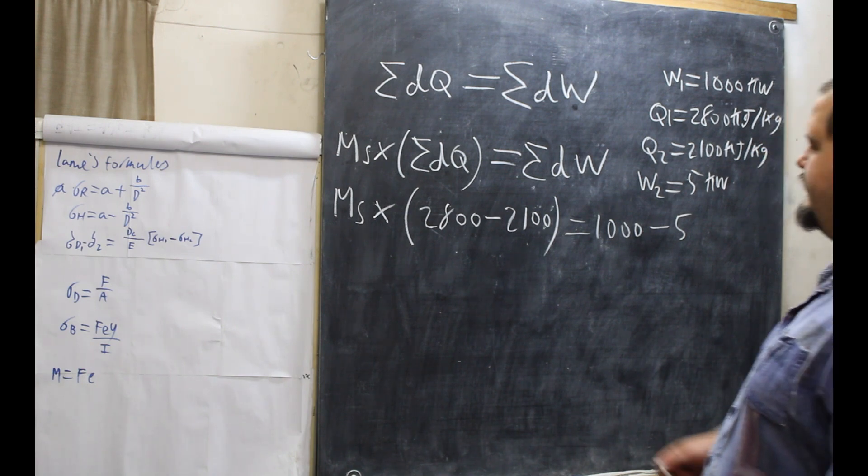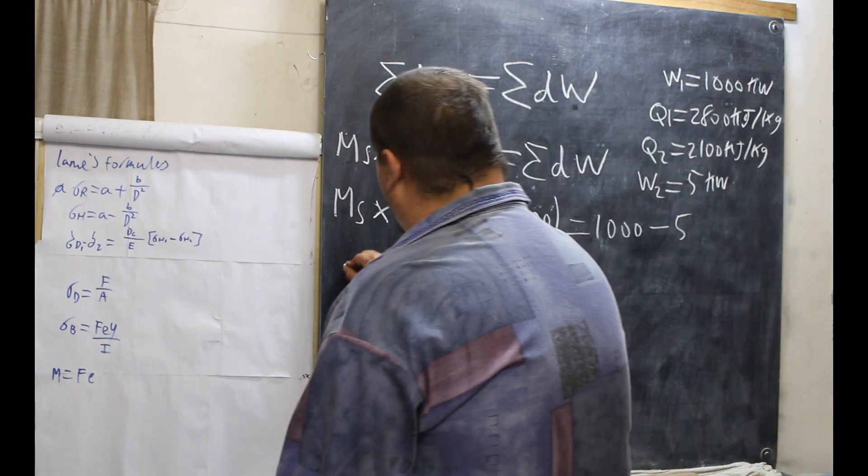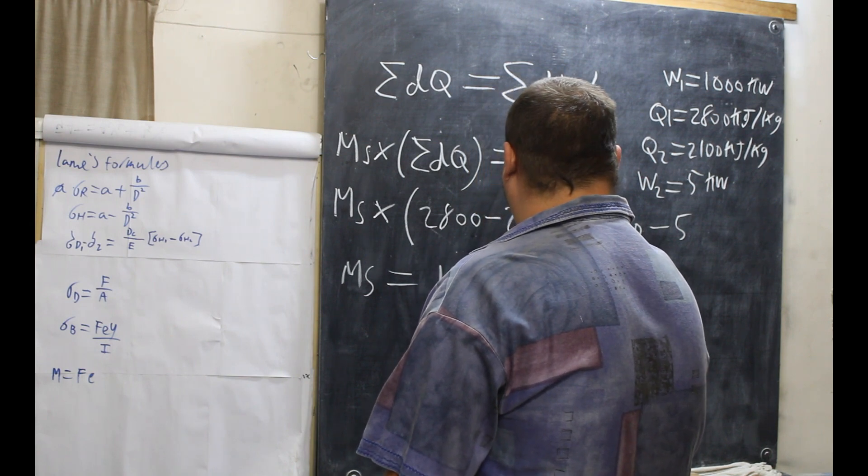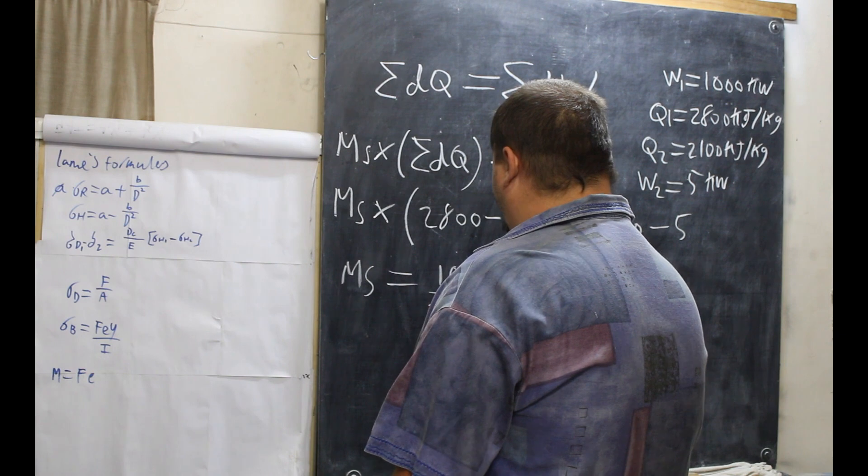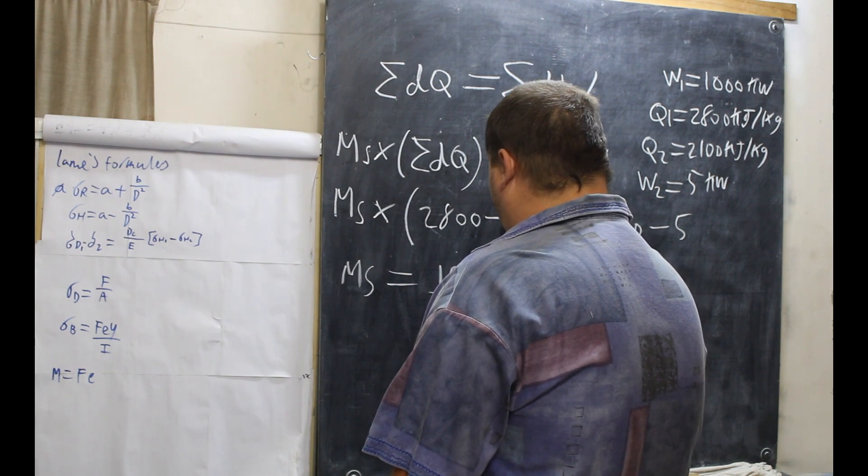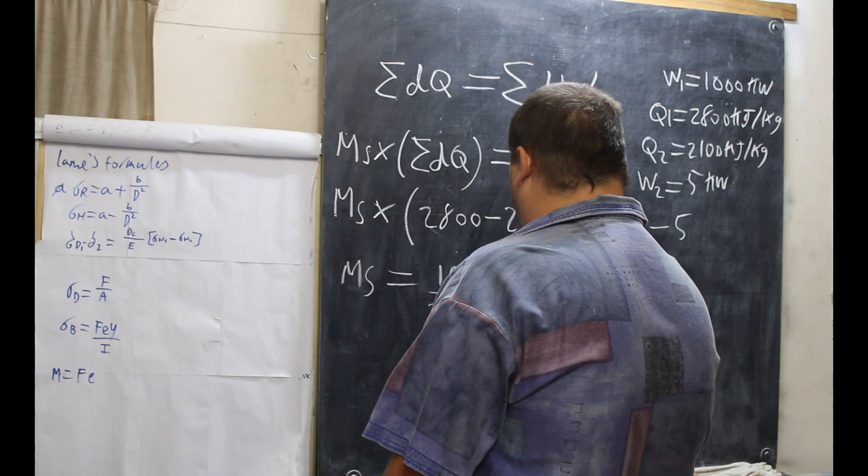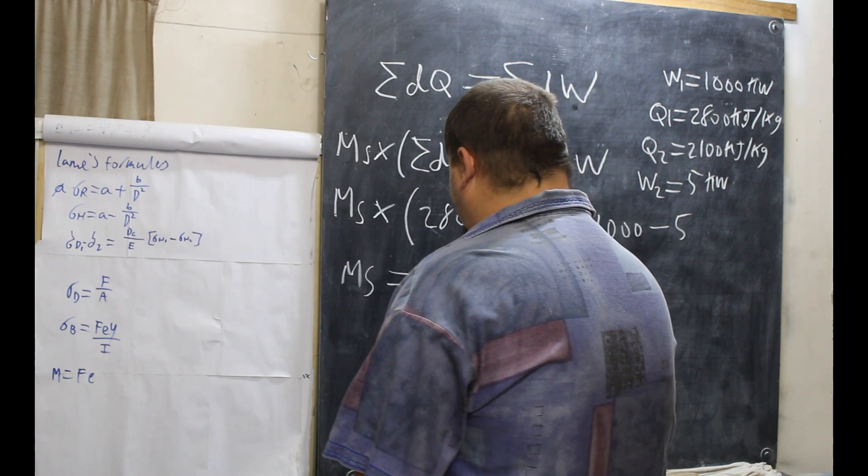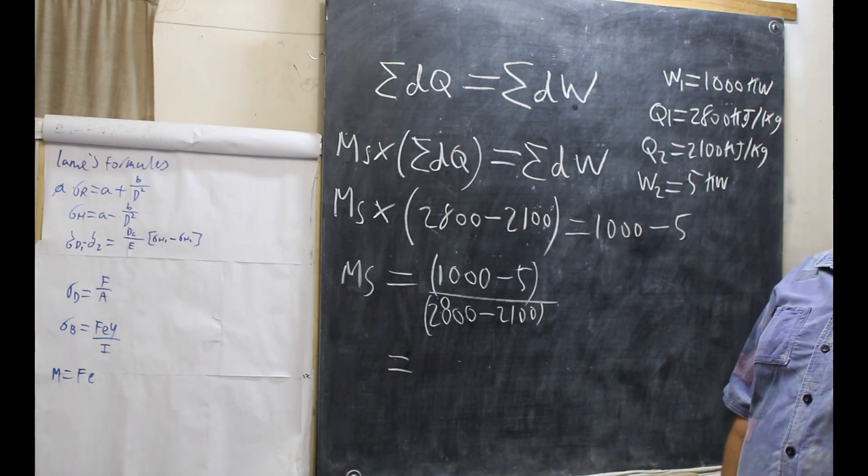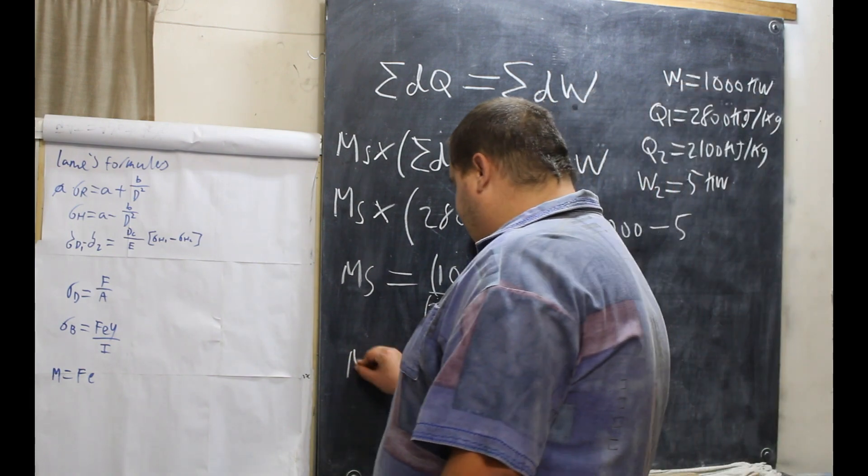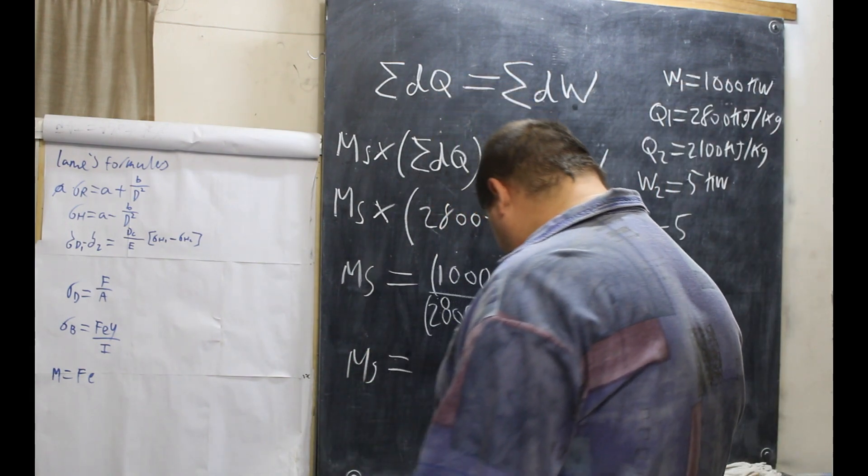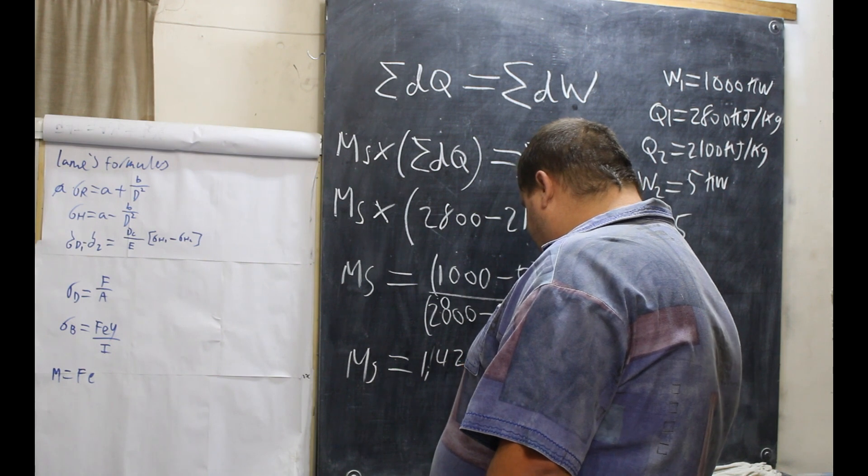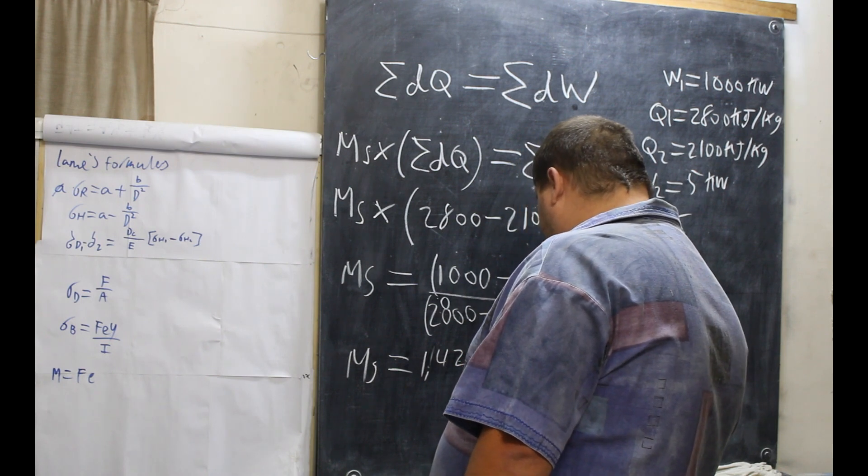MS times 2800 minus 2100 equals 1000 minus 5. So what we need to do is take this and move it over here. MS is equal to 1000 minus 5 all over 2800 minus 2100. And all these are in brackets, and our total sum, our mass of steam, is 1.421 kg per second.